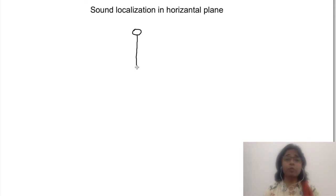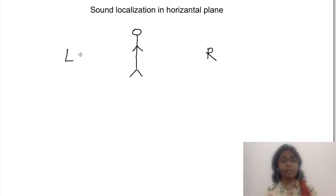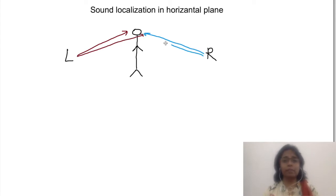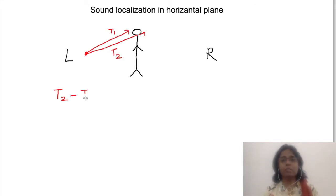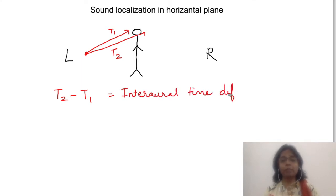The localization of sound in the horizontal plane can be done because a sound coming from left or right will reach different ears at different times. If it is coming from the left side, it will reach the left ear first compared to the right ear. The time difference in reaching both ears is known as inter-aural time difference.